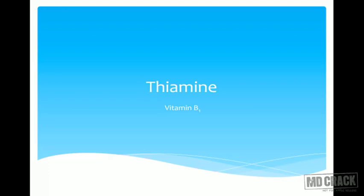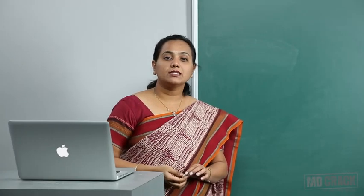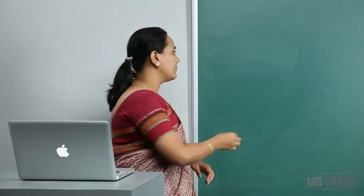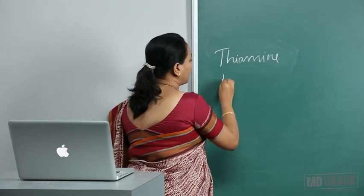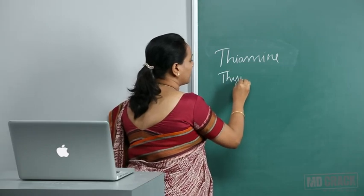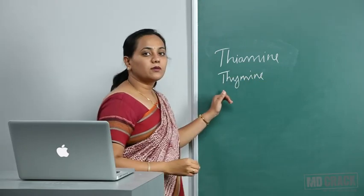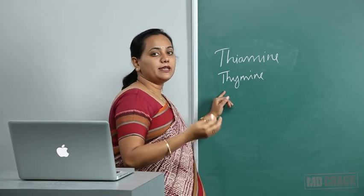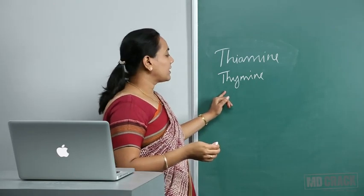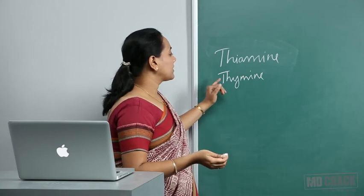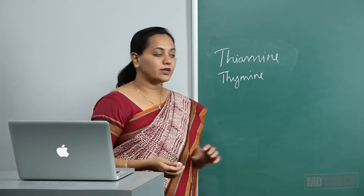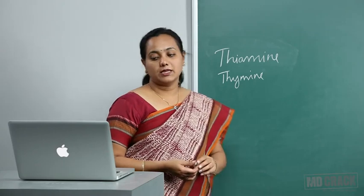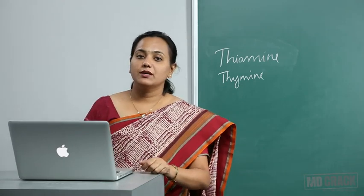Important: do not confuse thiamine (the vitamin) with thymine (the pyrimidine base in DNA). Thiamine is spelled T-H-I-A-M-I-N-E, and thymine is the base; in RNA, thymine is replaced by uracil. Thiamine is the vitamin (B1) and thymine is the nucleotide base.